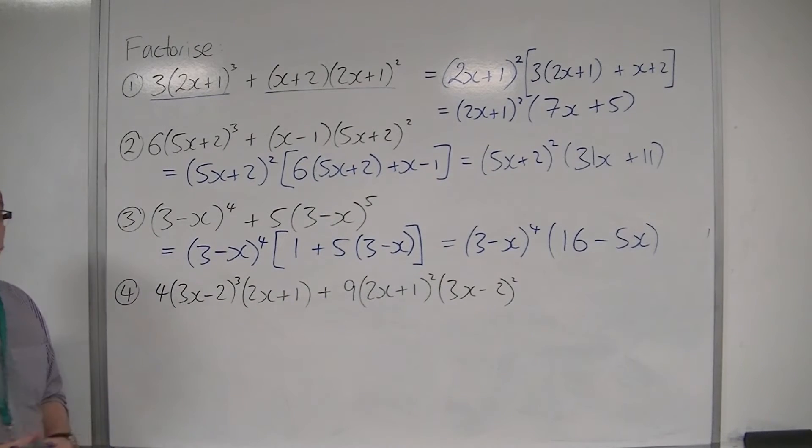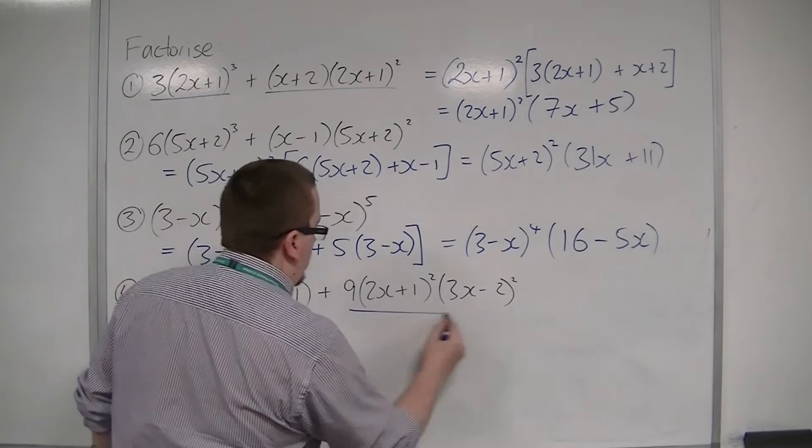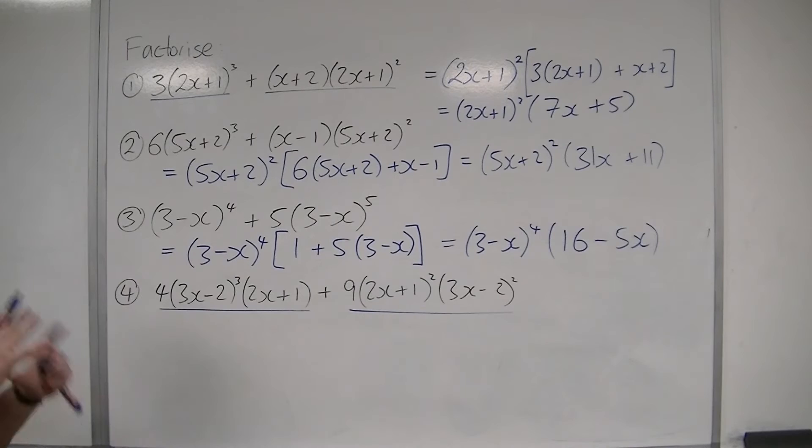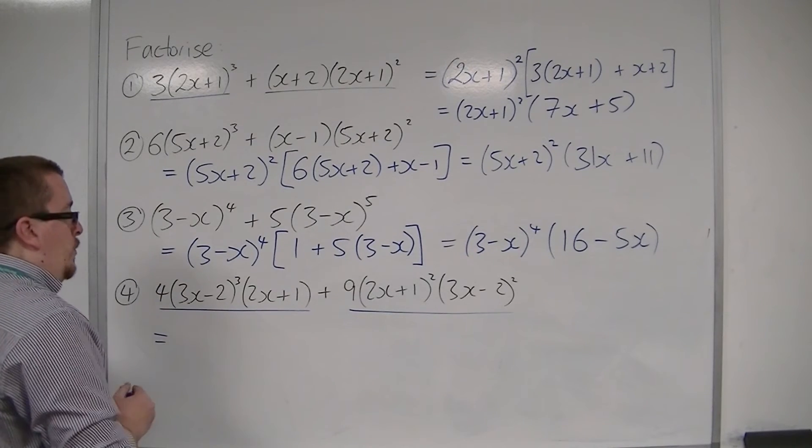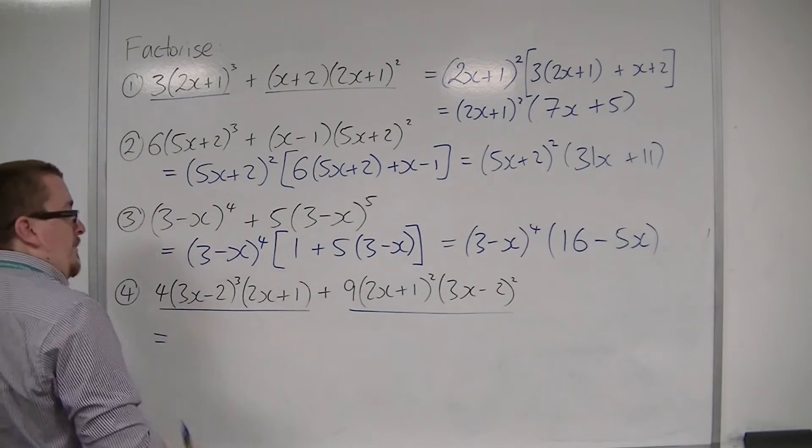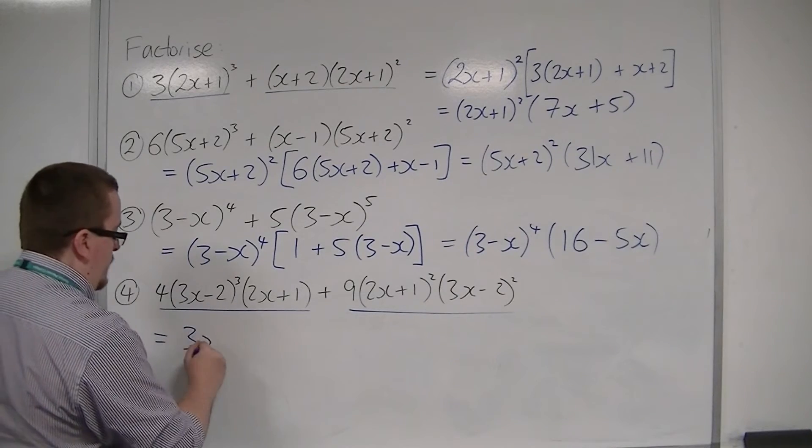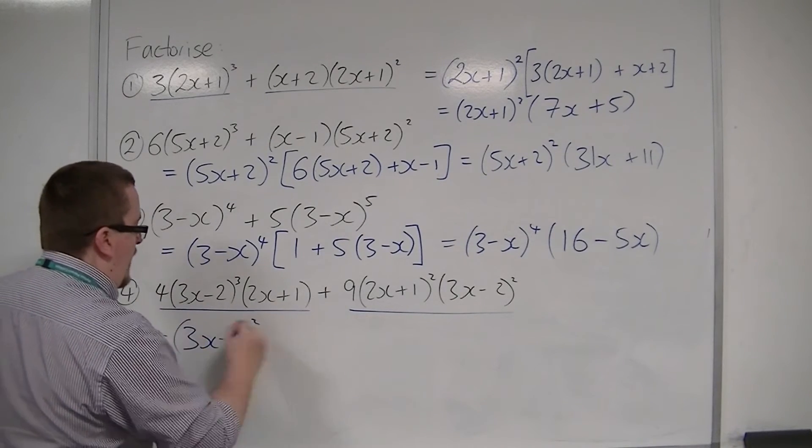We've then got this fourth one that looks absolutely ghastly, but it works in much the same way. These are my two terms. I'm looking for what is common to both. Both of them have this 3x minus 2. This one has 3 of them, that one has 2 of them. So, I can pull 2 of them at least out. So, 3x minus 2 squared can come out the front.